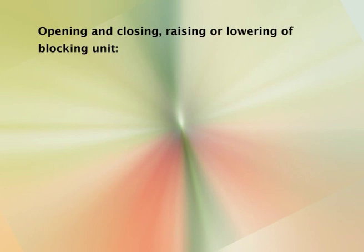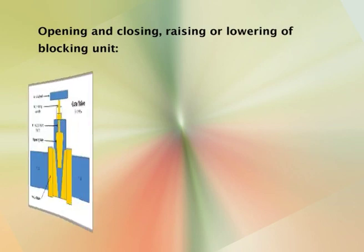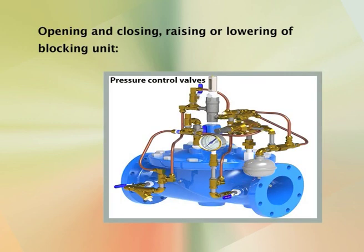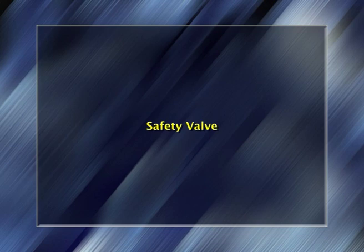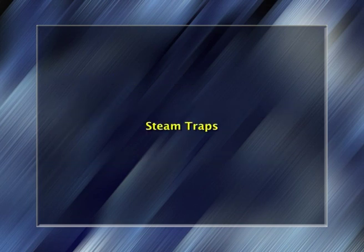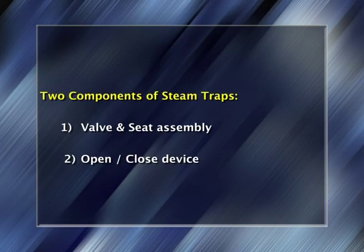Valves and steam traps: the different models of valves include gate valve, globe valve, piston valve, needle valve, check valves, and pressure control valves. Safety valve: there are two types by which increase in pressure is released — a spindle lifted from its seating against the pressure releases pressure, and bursting or rupturing of discs to release pressure. Steam traps are important to remove any steam condensate; they have two components: valve and seat assembly, and open-close device.